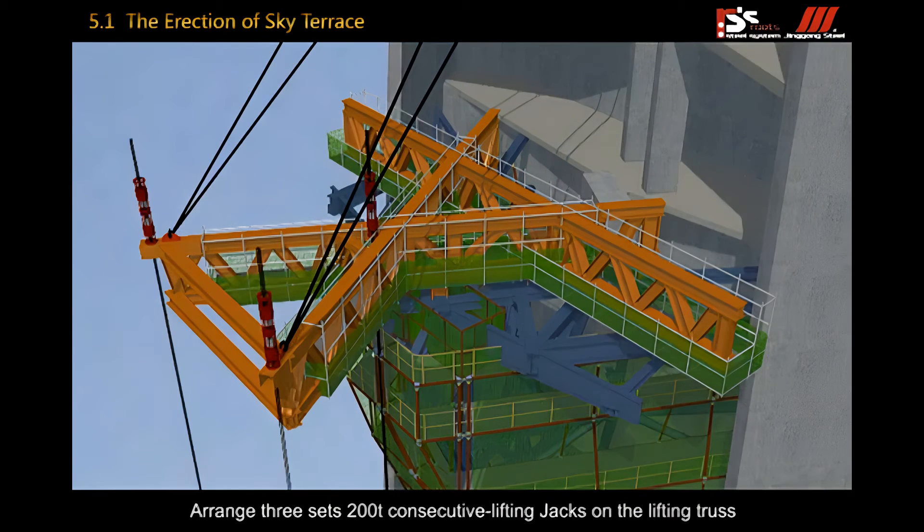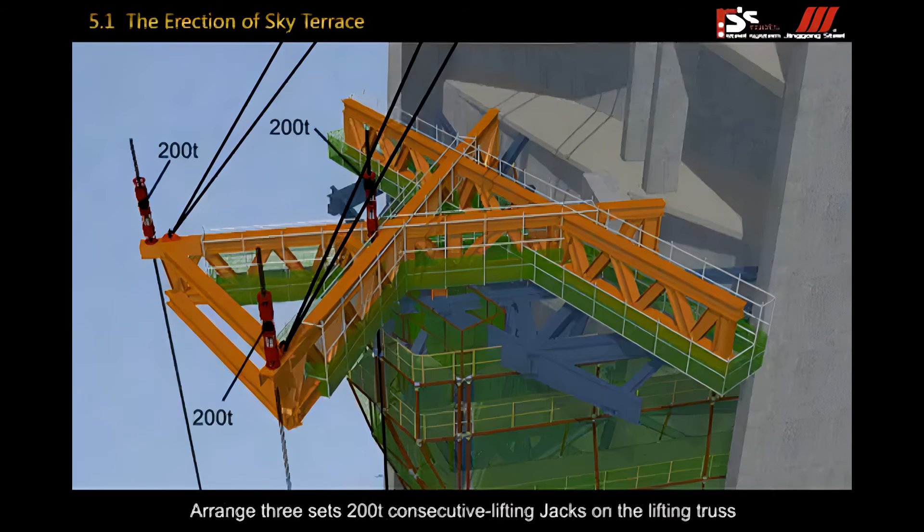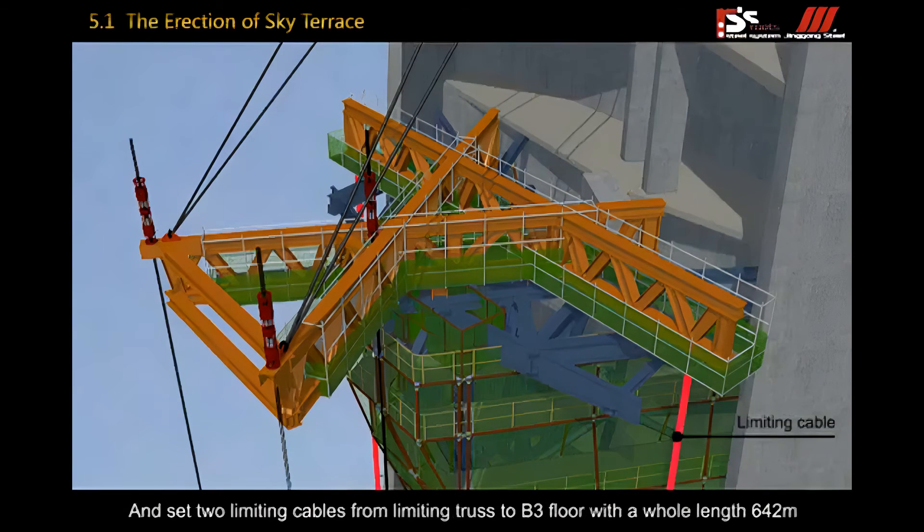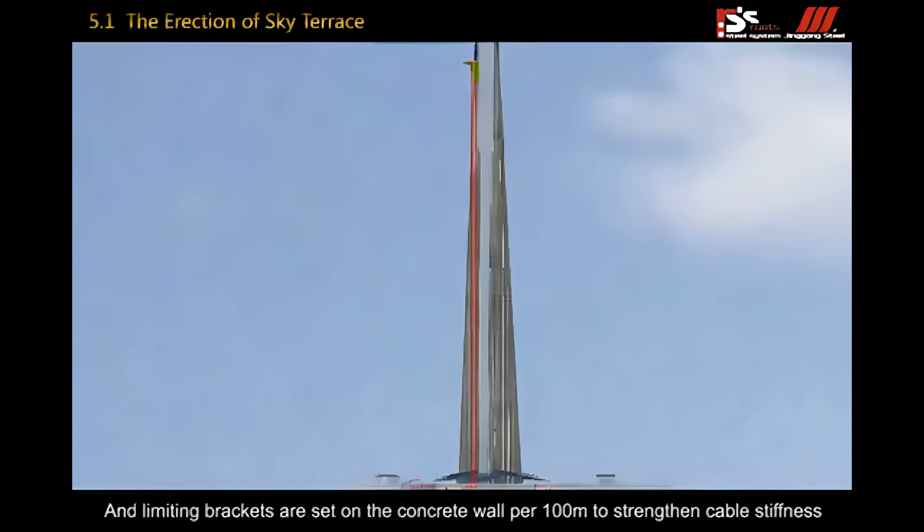Arrange three sets of 100 ton consecutive lifting jacks on the lifting truss and set two limiting cables from limiting truss to B3 floor with a total length of 642 meters. Limiting brackets are set on the concrete wall to strengthen cable stiffness.